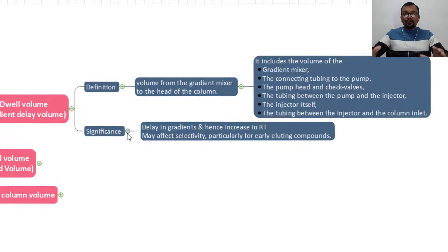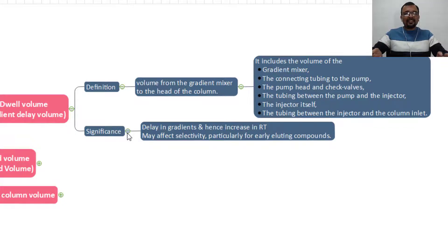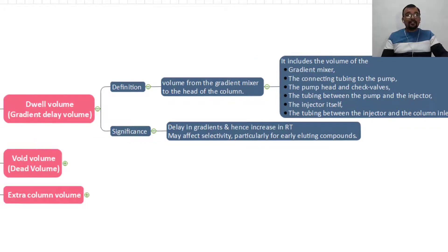Because of that, you may have a delayed retention time, or sometimes you may get different selectivity for the early eluting peaks. It is very important to understand how much the dwell volume of the system is, and what should be the limit for the dwell volume when running a gradient program. Different dwell volumes can result in different chromatographic patterns and different retention times — the more the dwell volume, the higher the retention time.